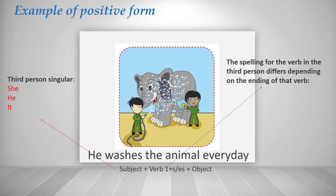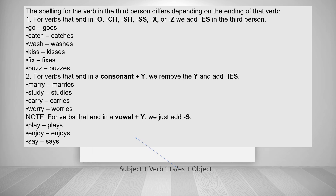The spelling for verbs in the third person differs depending on the ending of the verb. For verbs ending in -o, -ch, -sh, -ss, -x, or -z, we add -es. For verbs ending in a consonant plus -y, we remove the -y and add -ies. For verbs ending in a vowel plus -y, we just add -s. Look at the examples.